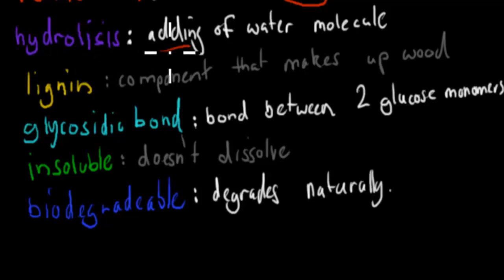Hydrolysis is the adding of water molecules. Lignin is the component that makes up wood. So we've got lignin and cellulose. These are two main parts of plants.